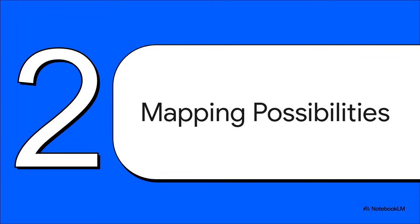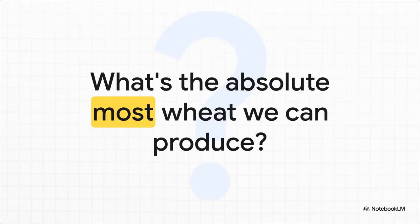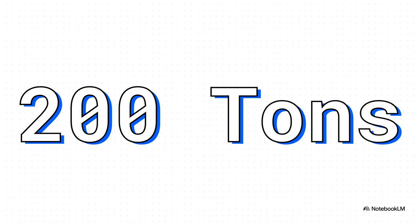With these simple rules in place, we can now map out every single possible production combination our little economy can make. Let's actually draw a map of our economic world. Starting at one extreme — what if our society just decided we only want wheat, and we put every single worker into making just that one thing? The math is easy: 100 workers, each producing two tons of wheat, gives us a maximum of 200 tons. That's one edge of our economic world right there.